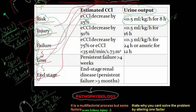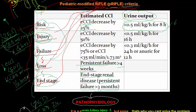The L in RIFLE stands for Loss: persistent failure of kidney function for more than four weeks. The E stands for End-stage renal disease: persistent failure lasting more than three months. So if failure persists beyond four weeks it is Loss, and if it continues beyond three months it becomes End-stage renal failure.